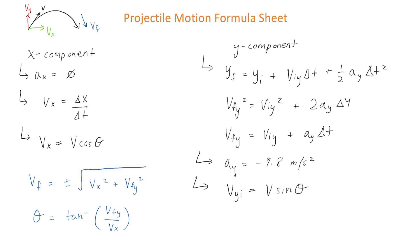In order to find the angle of this final velocity vector, you have to use theta is equal to tan inverse of vfy divided by vx.